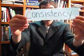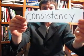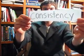Today we have a very easy lesson. We have only four words and three of them are almost the same. The first word that is different is consistency. Consistency means the degree to which something is the same.